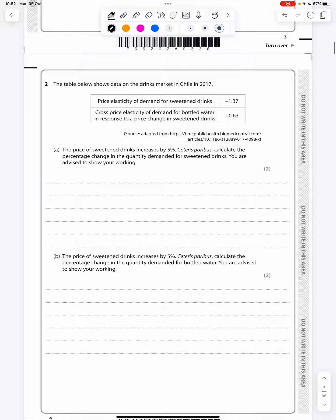The table below shows data on the drinks market in Chile in 2017, the PED for sweetened drinks and the XED cross price elasticity of demand for bottled water in response to a price change in sweetened drinks. The price of sweetened drinks increased by 5%. Ceteris Paribus, calculate the percentage change in quantity demanded for sweetened drinks.